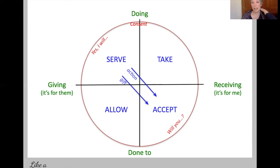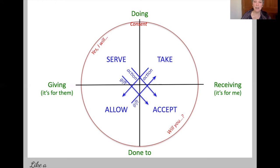The other two quadrants are take and allow. In take and allow, I'm doing, but I'm receiving a gift — I'm doing what I want to do, and the gift I'm receiving is access to you. You're the one allowing. In the take-and-allow dynamic, the action goes from the taker to the allower, but the gift goes the other direction — it goes from the allower to the taker. The taker is taking action they want to take, and the allower has given permission. In the serve-accept dynamic, the gift is the action.